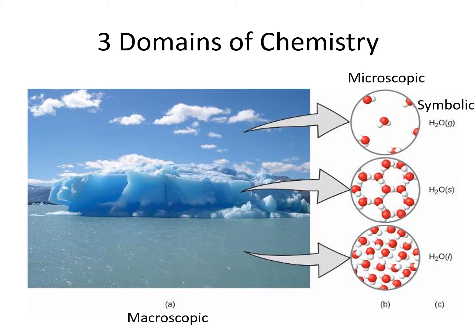The microscopic domain is what we would see if we could see atoms and molecules. They are actually too small to see with a microscope, so we make drawings to help us picture them. Notice that in each of our phases of water, the water molecules all look the same — one red sphere representing oxygen, with two white spheres representing hydrogen.